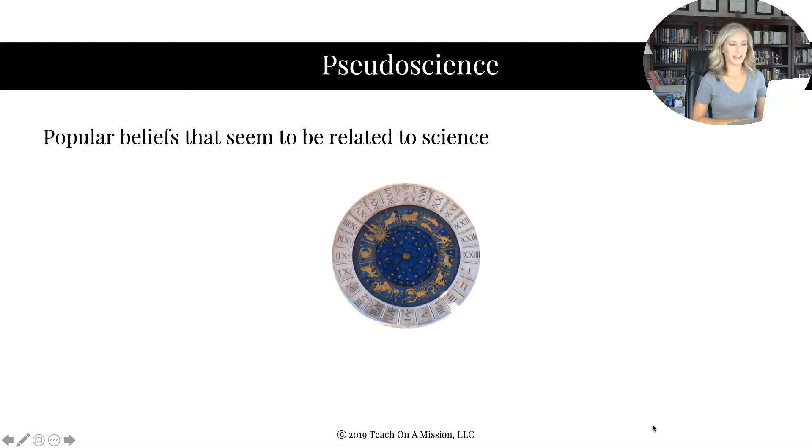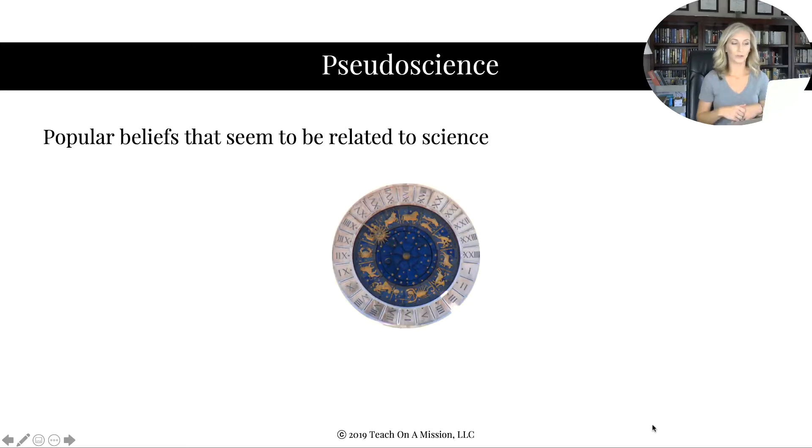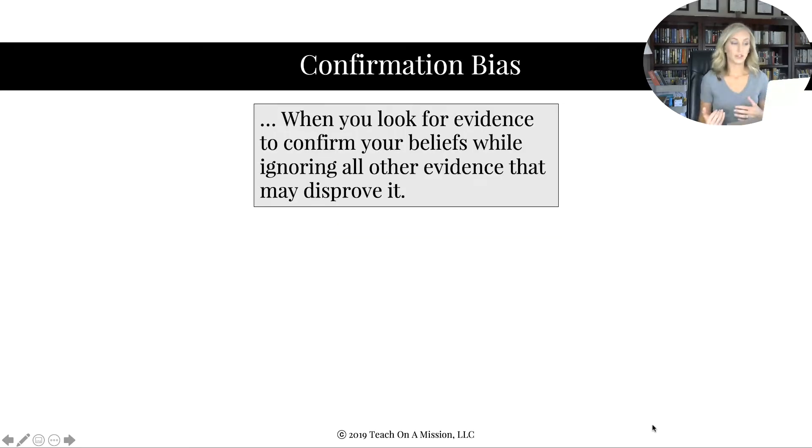Pseudoscience—this is a big one. Pseudoscience is not really thinking critically with psychological science. These are popular beliefs that seem to be related to science and they include all kinds of things like ESP and clairvoyance and that kind of stuff. Confirmation bias is when you look for evidence to confirm your beliefs while ignoring all other evidence that may disprove it. This could be in research, this could just be in a disagreement or friendly discussion that you're having with a group of people or friend. And I want you to write this down: this could be either intentional or unintentional, in that you subconsciously just don't even see information or hear it or experience it that disproves your belief.